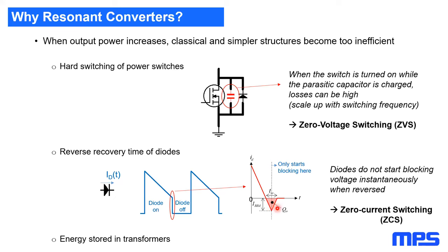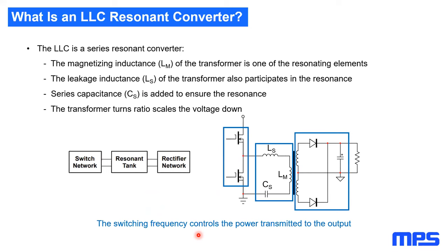The solution for diode recovery losses is to operate in zero current switching — bring the current to zero before reversing the voltage across the diode. Another source of losses, especially for flyback, is energy stored in the transformer itself. Going to resonant converters makes it easy to combine all of this and achieve higher efficiency at higher output power.